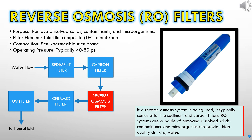Comprising a semi-permeable membrane, it effectively separates impurities from the water, allowing only pure water molecules to pass through. Operating within the typical pressure range of 40 to 80 pounds per square inch (psi), this membrane efficiently purifies the water while maintaining adequate flow rates for household use.